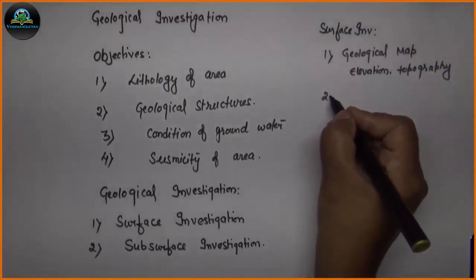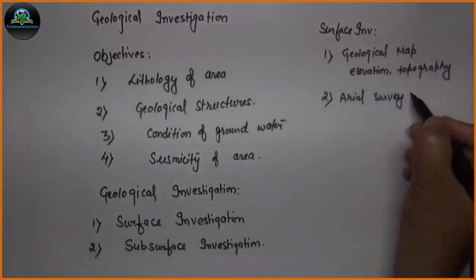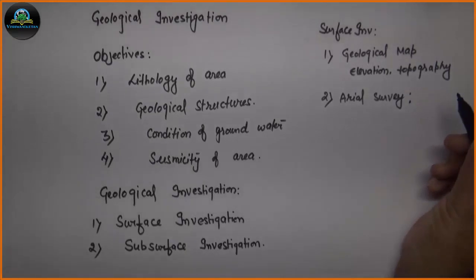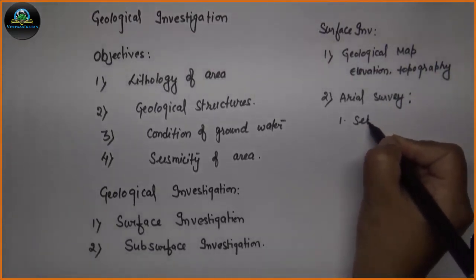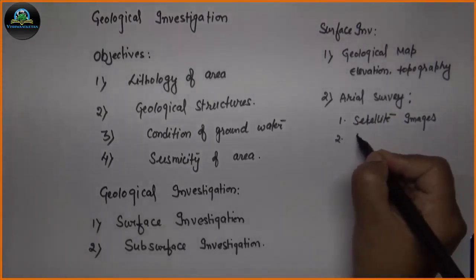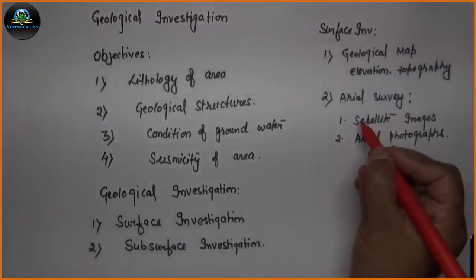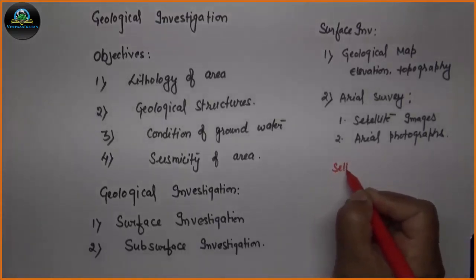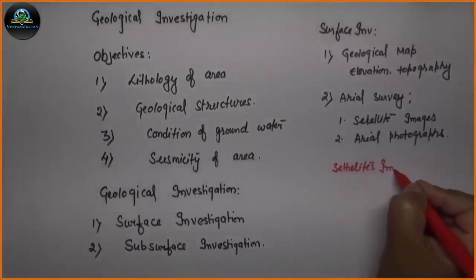The second surface investigation method is aerial survey. Nowadays, aerial survey has gained great significance because it is very easy and takes much less time compared to conventional geological map methods. It includes satellite imageries and aerial photographs. Satellite imageries, if correctly interpreted, give very important information about the ground data.